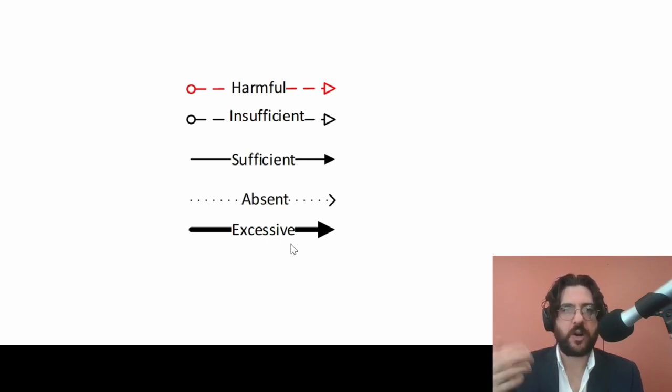Straight away, if you see there's a harmful interaction, you know that's a problem. Or if there's an insufficient or an excessive interaction, you know that's a problem. You wouldn't necessarily make changes to something that was sufficient, because why would you?